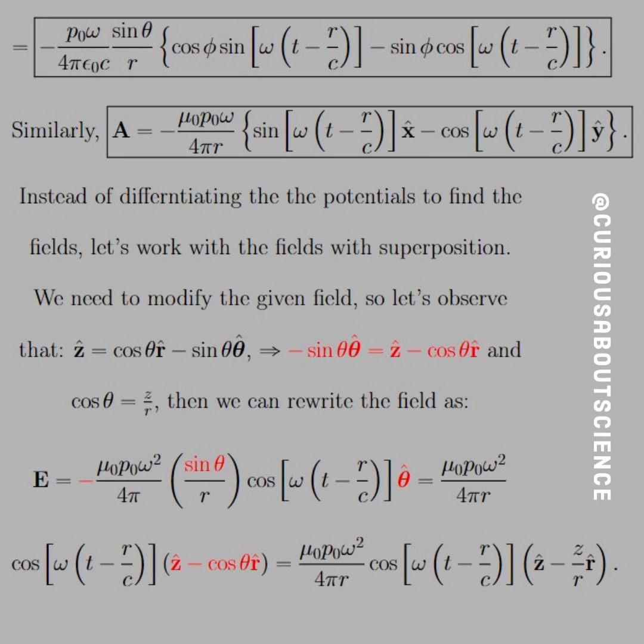Anyways, as we move on, we see instead of differentiating the potentials to find the fields, let's work with the fields with the superposition, again, to save time. We need to modify the given field. So let's observe that the Z hat, if we were to write this in spherical coordinates or spherical unit vectors, cosine theta R hat minus sine theta theta hat. So if we push that through, we see what the sine theta theta hat is with respect to Z and R. The reason why is because cosine was given as Z over R, and we can rewrite the field equation. You see, we have a sine theta there and the unit vector. So we push the R minus cosine R hat in. And with that, we know that the cosine goes to Z over R. So we have everything we need as far as the modifications for the electric field.